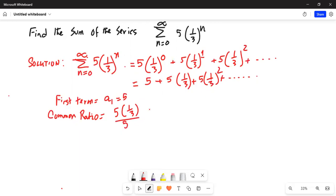And that is equal to 5 thirds times 1 over 5 is equal to 1 third. That's my common ratio.